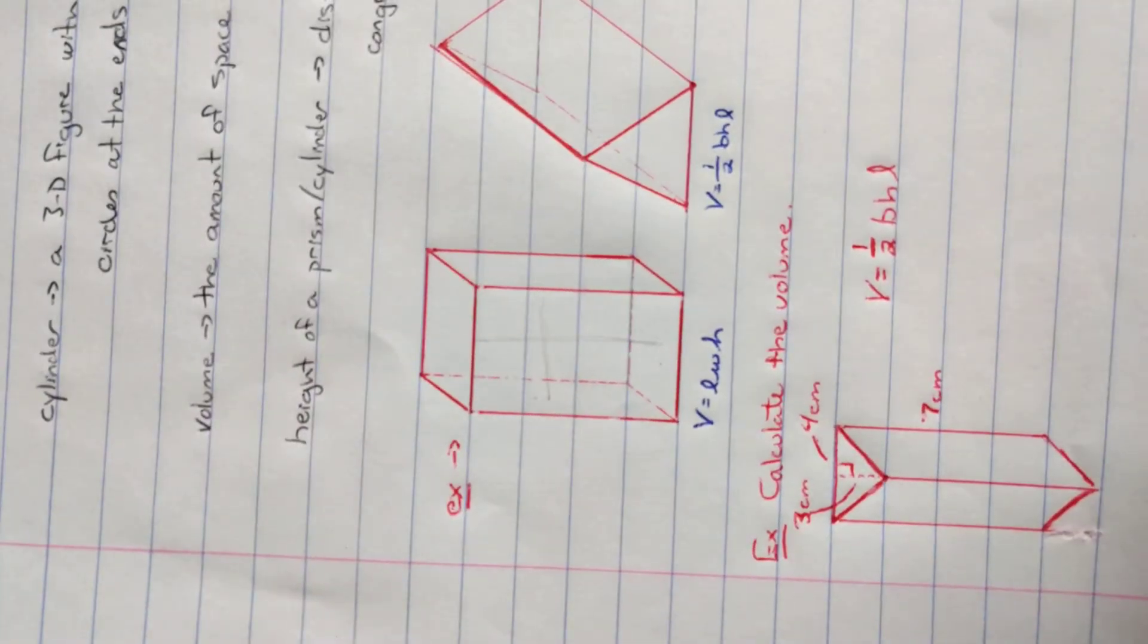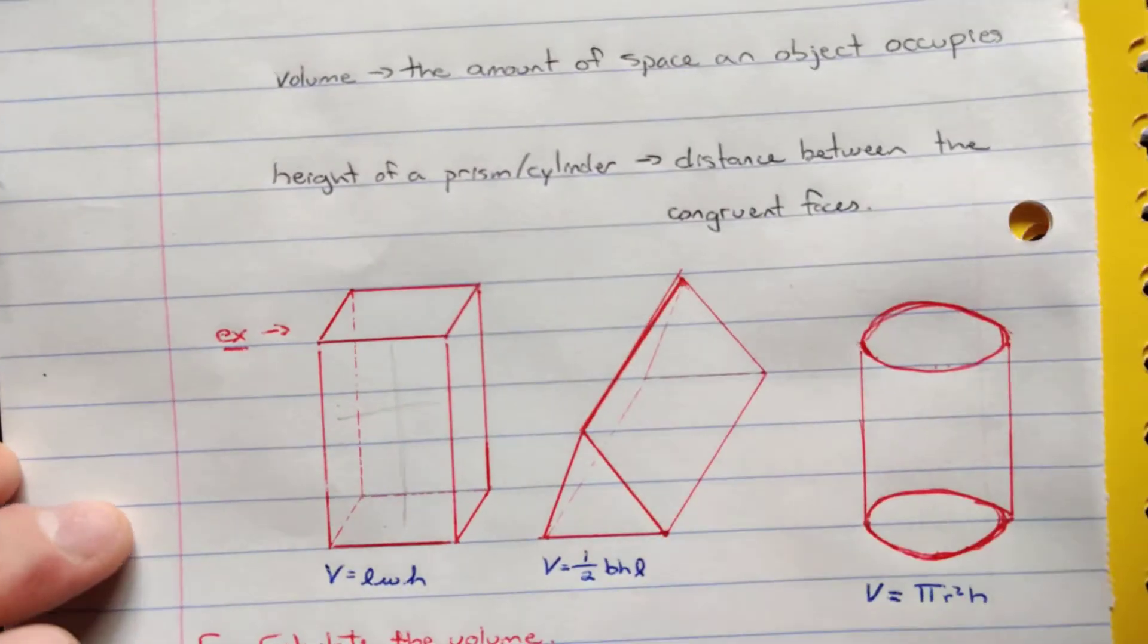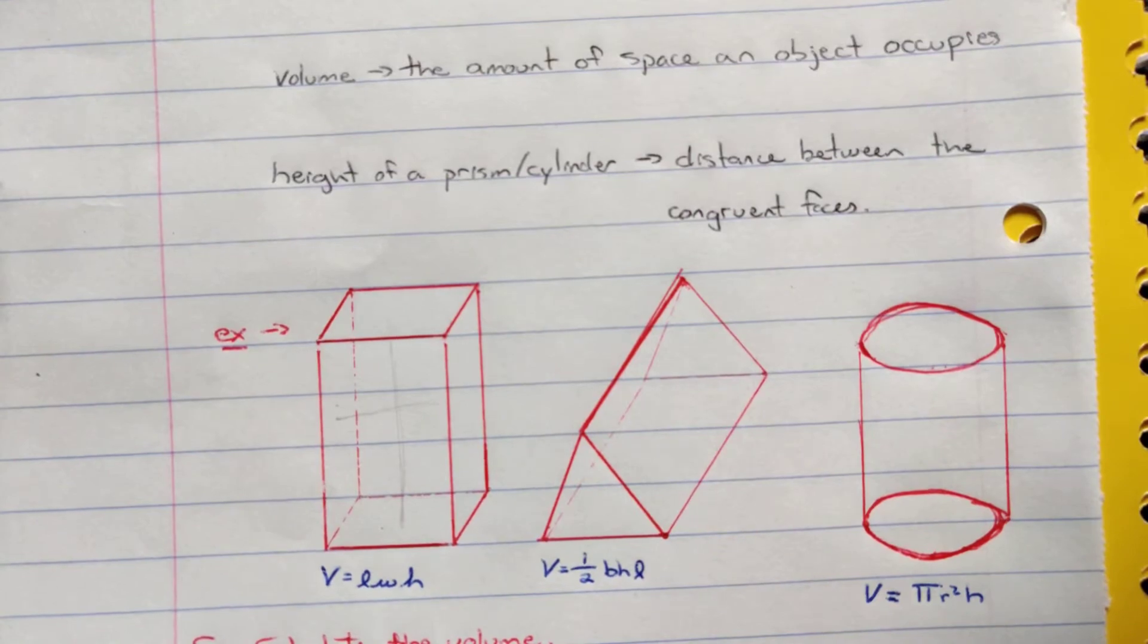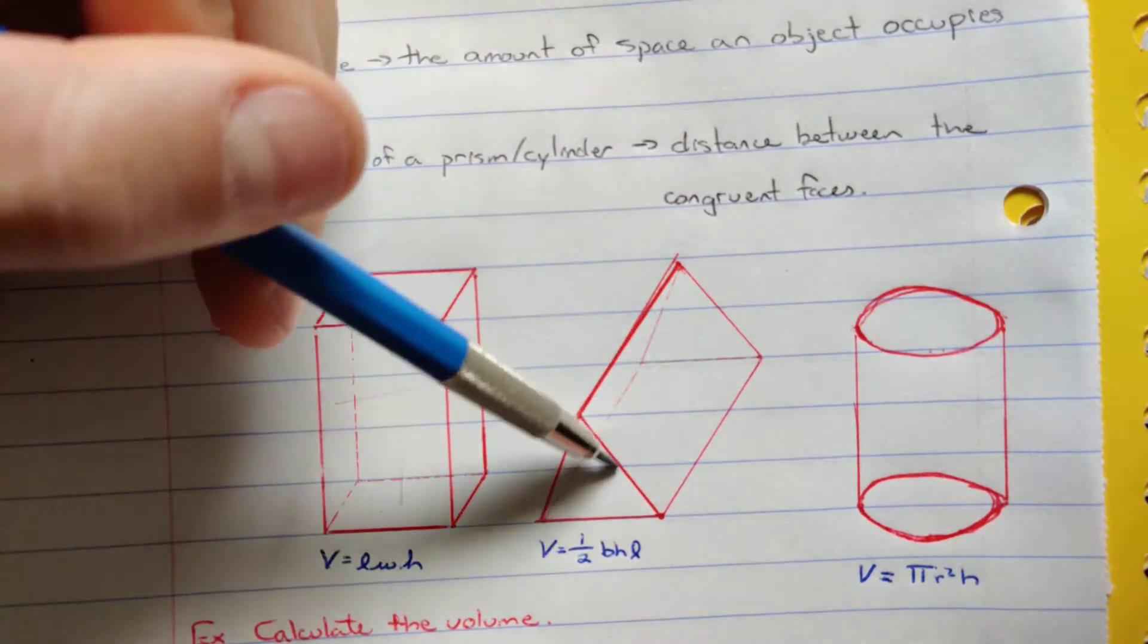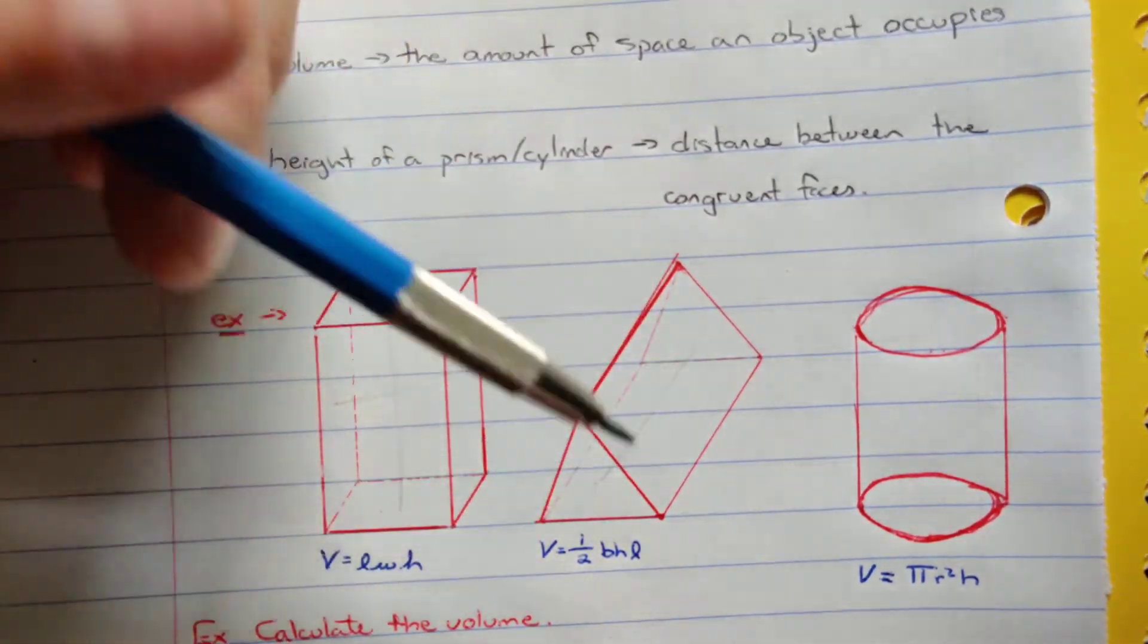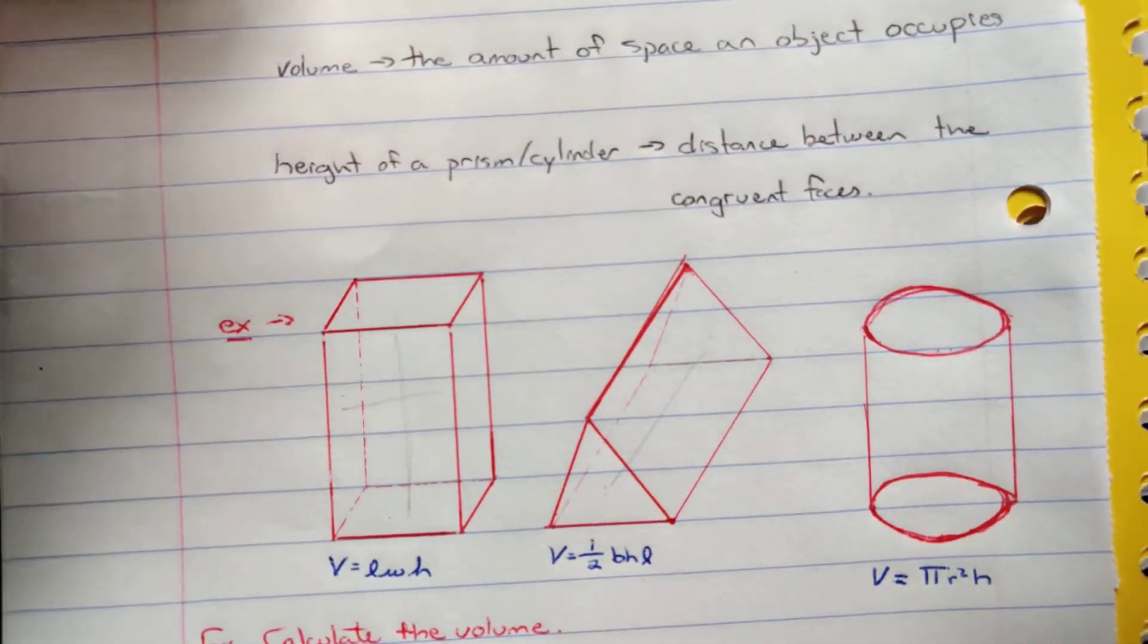That doesn't make sense. But hey, if I turn my shape that way, all of a sudden that's the height. Similar idea with the prism here, that triangular prism. The distance from these two triangles on either end would be the height. So even though it's laying down,